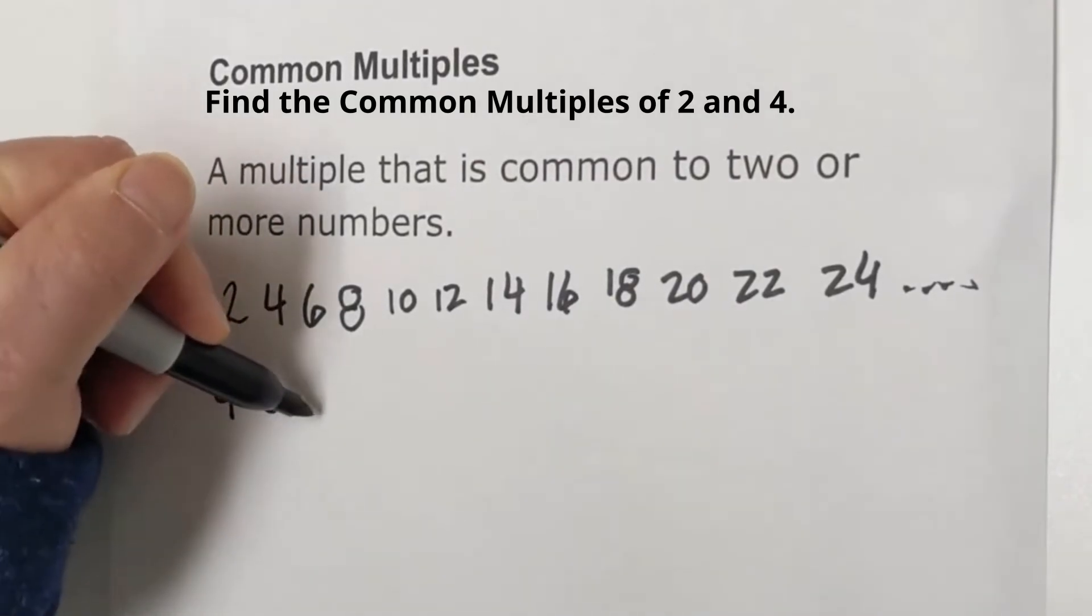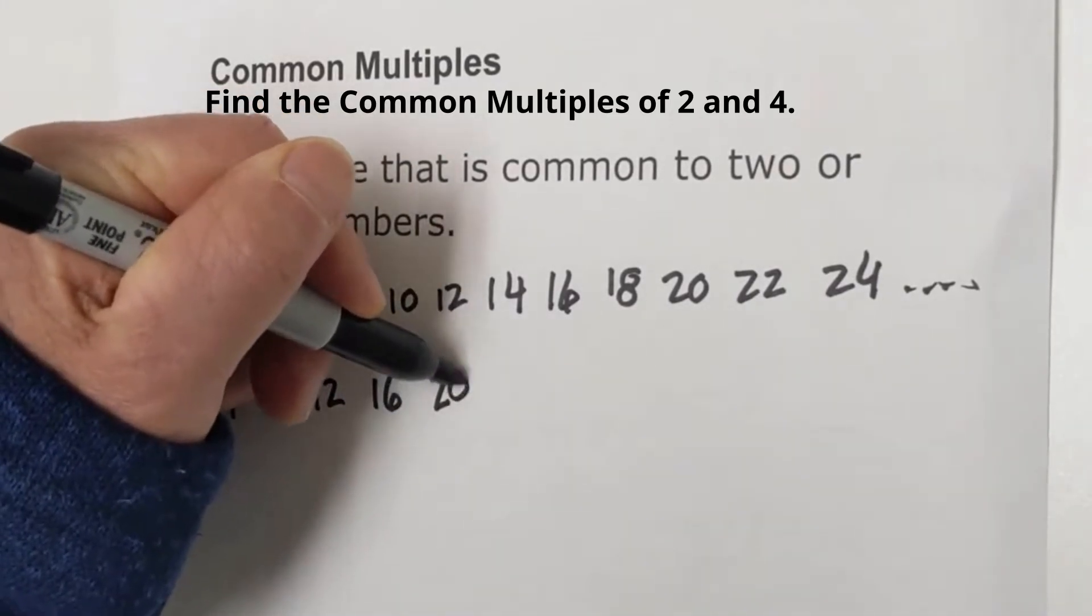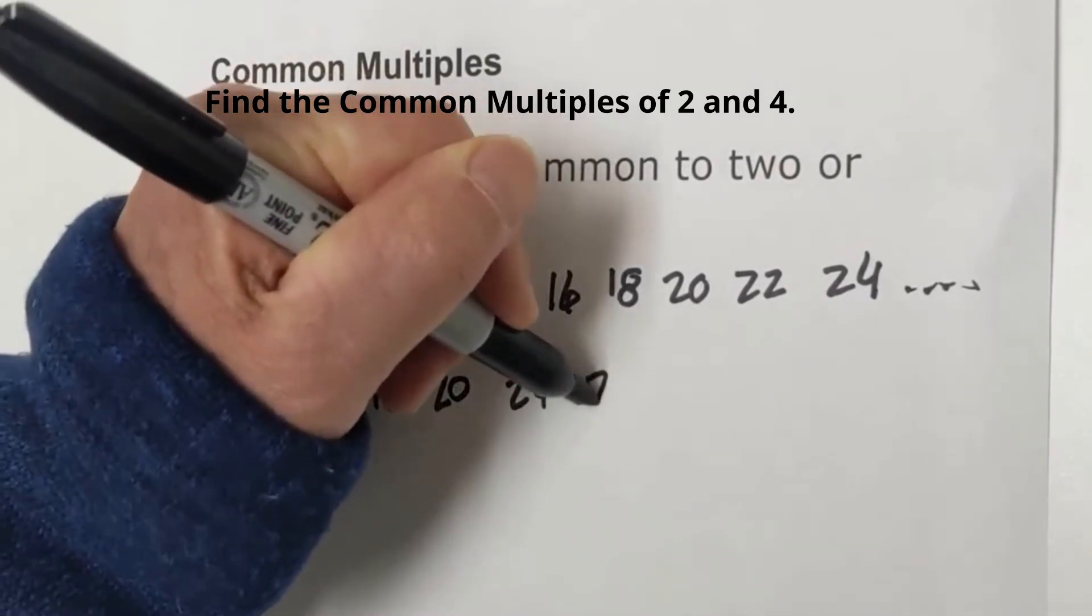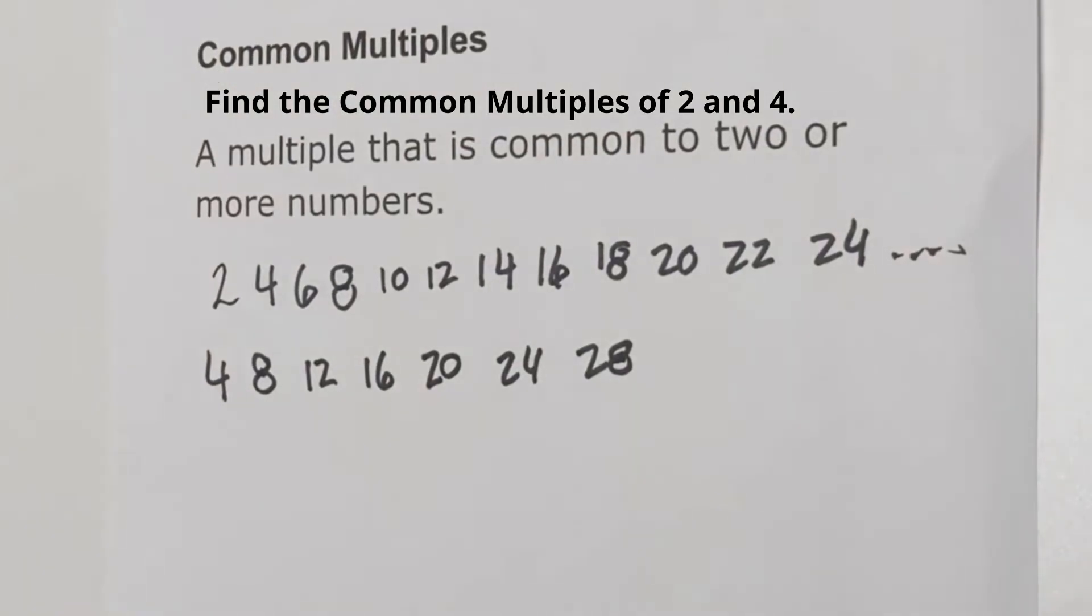Now let's look at four. Four is four, eight, twelve, sixteen, twenty, twenty-four, twenty-eight, and again I can go on to infinity. So what a common multiple is, is one that is found in both numbers.